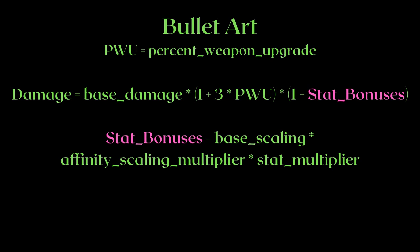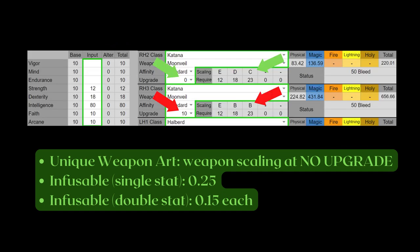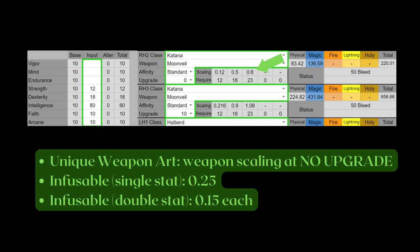Stat bonuses is equivalent to base scaling times affinity scaling multiplier times stat multiplier. Let's begin with the base scaling term — this term splits into three types. For unique weapon arts, this term is the same as the weapon scaling for the right stat at NO UPGRADES. This is important: NO UPGRADES. Let's use Moonveil as an example. Moonveil does magic damage, so we use intelligence. We're going to need the scaling number behind the letter grade — not the plus 10 Moonveil, because the damage you'll get would be off by a ton. The right number to use for calculating a fully upgraded Moonveil's bullet art would be 0.6.